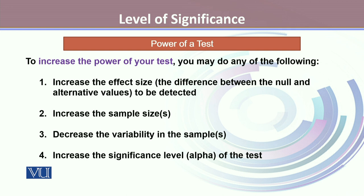One can increase the power of a test by: increasing the effect size, which is the difference between the null and alternative values; increasing the sample size; decreasing the variability in the sample; or increasing the significance level of the test. All these four measures help increase the power of the test. However, one should find a fair balance between sample size, effect size, variability, and significance level. An unfair increase or decrease in any of these values will increase the chances of committing type 1 error or type 2 error.